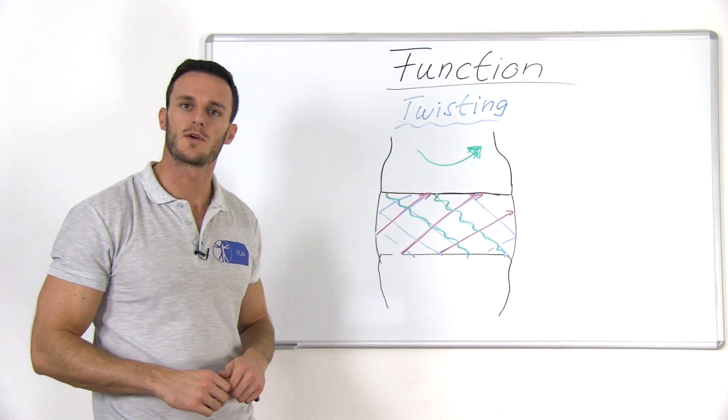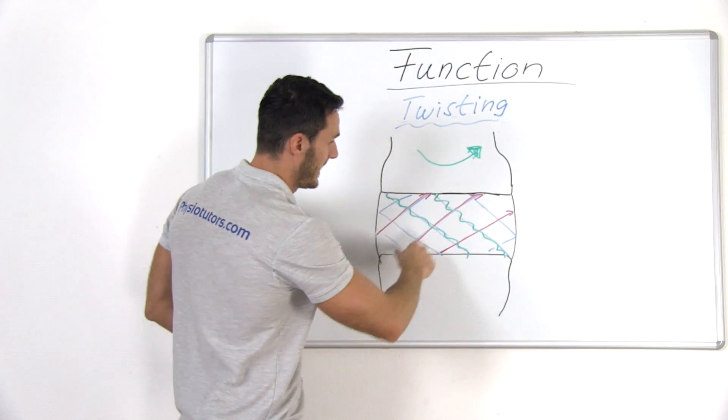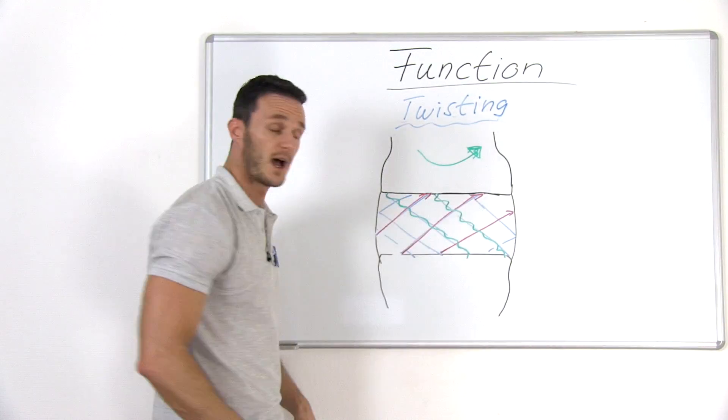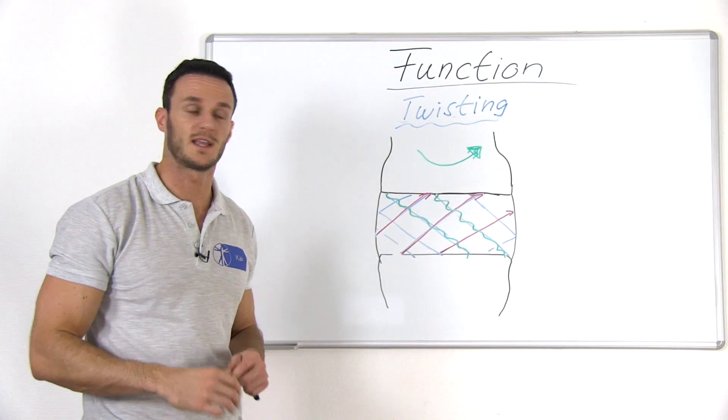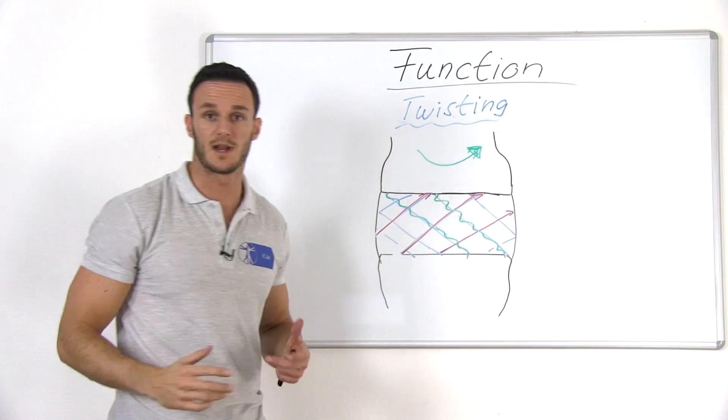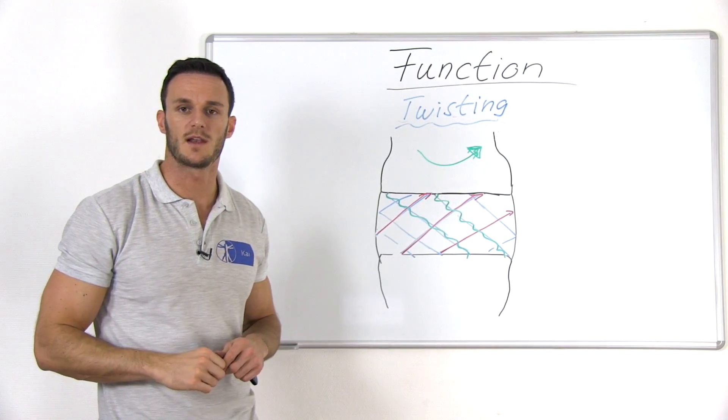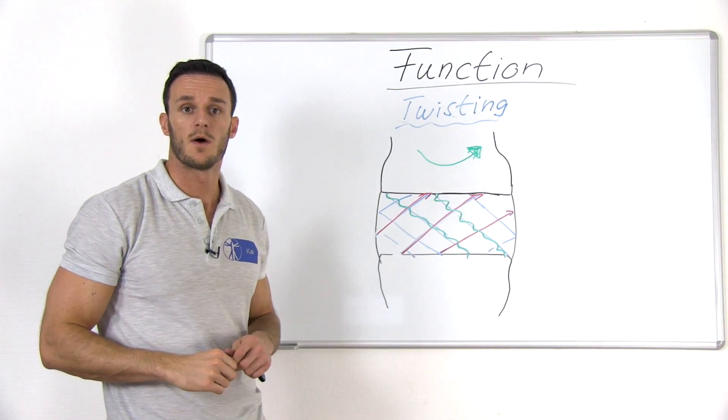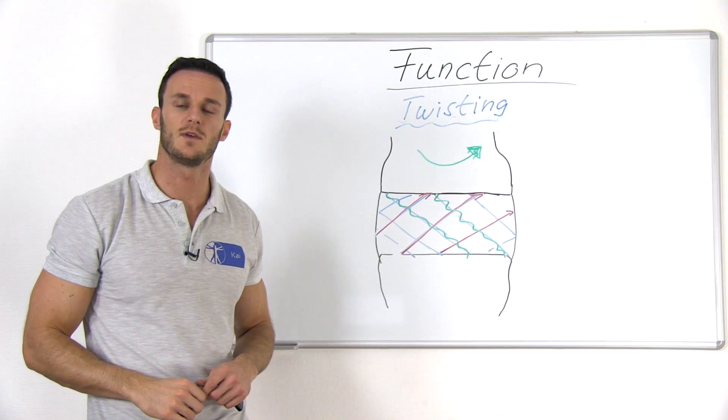For twisting movements, the story is basically the same. Only the fibers that lie in the direction of the twist are stretched and resist the movements, while the other fibers that lie in the other direction are approximated and relaxed. So, only half of the fibers of the annulus resist twisting, which is one of the reasons why twisting movements are the most likely to injure the annulus.